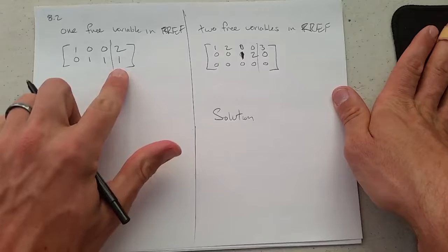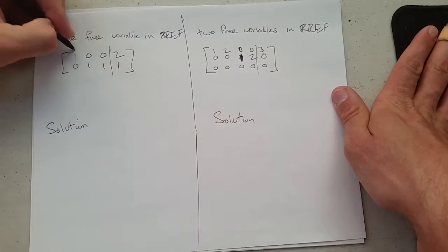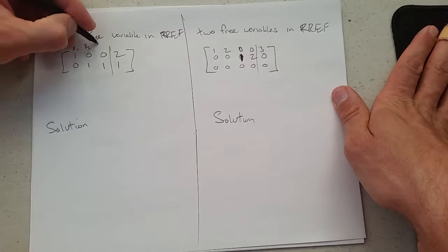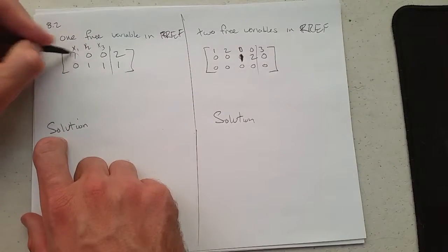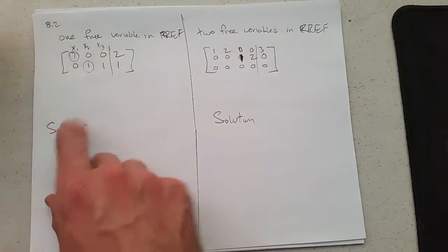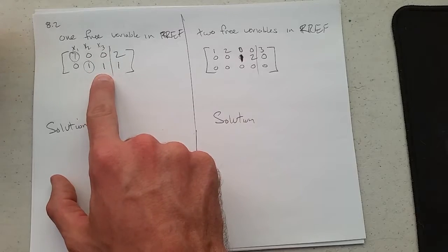How do I know there's one free variable? These both need to be augmented. These are not variables over here. So if we want x1, x2, x3. x1 is locked down here. x2 is locked down right there. x3 is free.